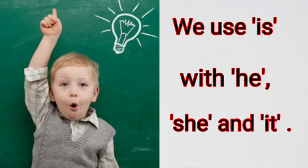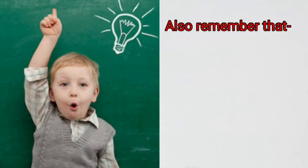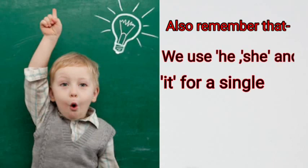Hum 'is' ko he, she, and it ke saath use karte hain. Also remember that we use he, she, and it for a single person. Hum jab bhi kisi ek vyakti ke baare mein ya ek cheez ke baare mein baat karein, to hum he, she, and it ka prayog karte hain.